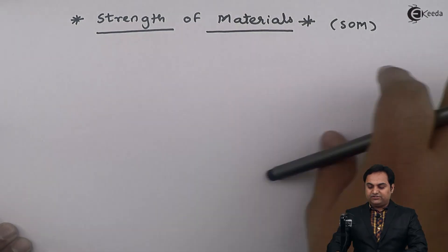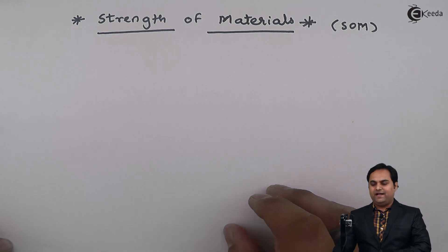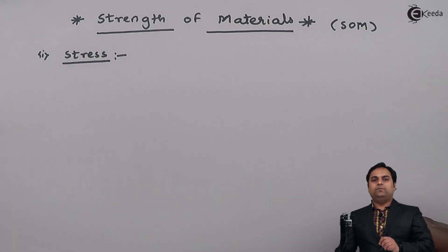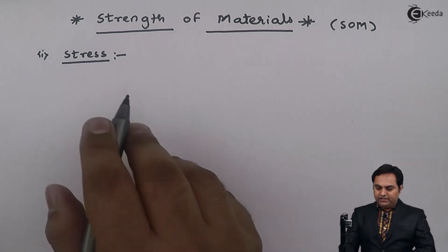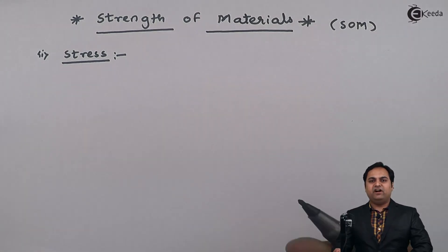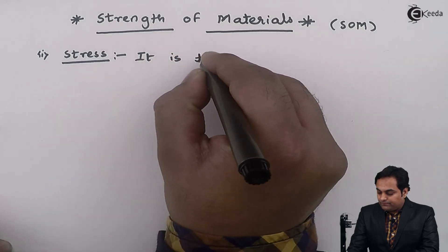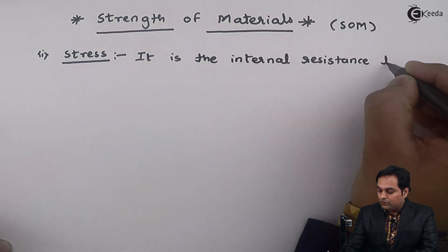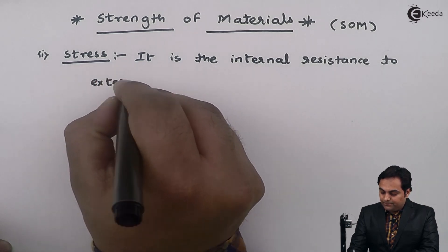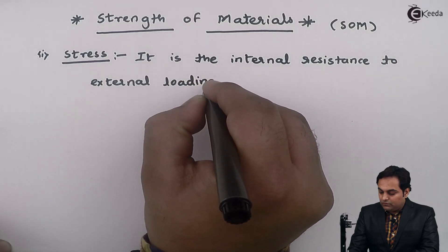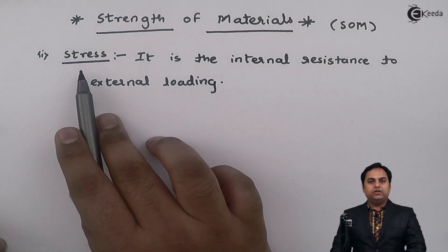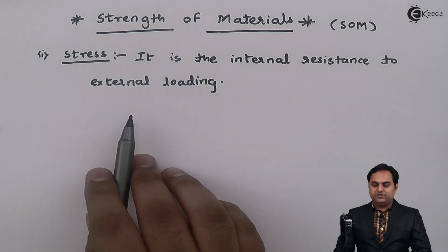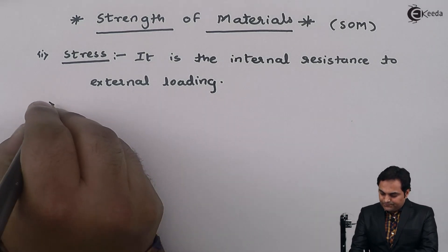When discussing Strength of Materials, the first concept that comes to mind is stress. Stress is the most fundamental term in SOM. It is defined as the internal resistance to external loading — it is an internal property of a material which resists external loading.